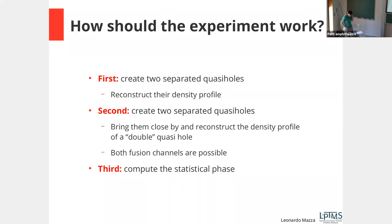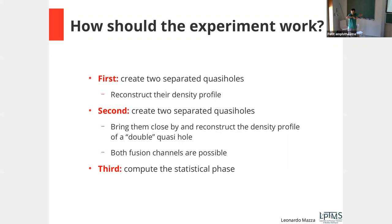Can this be turned into an experimental protocol? There is an accuracy issue, but that problem exists for experiments too. The idea would be: first, create a separated single quasi-hole and reconstruct its density profile; then create two separated quasi-holes, bring them close, and reconstruct the density profile of the double quasi-hole — noting that both fusion channels (odd or even particle number) are accessible. Analyzing these profiles with the formula gives the statistical phase.